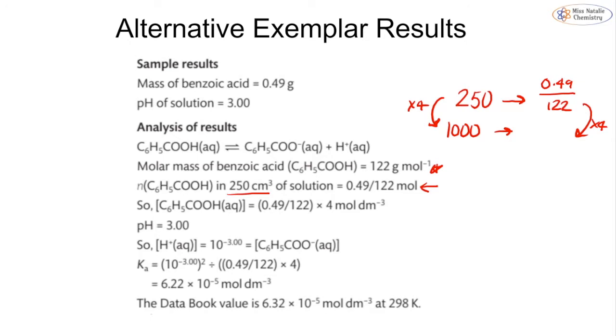We can then figure out our hydrogen ion concentration using our pH, and we get that to be 10⁻³. And then we use this expression here to determine our Ka value, which is our [H⁺]² divided by our hydrogen ion concentration. And we get a value of 6.22 × 10⁻⁵ mol dm⁻³.